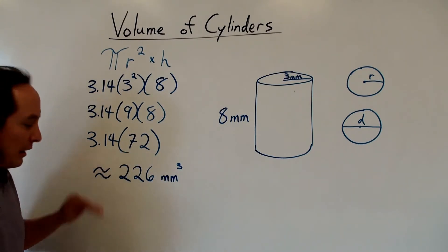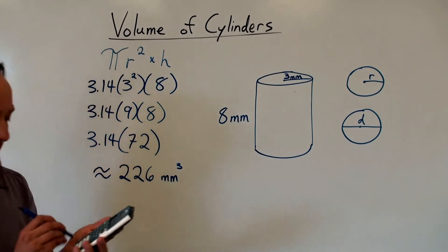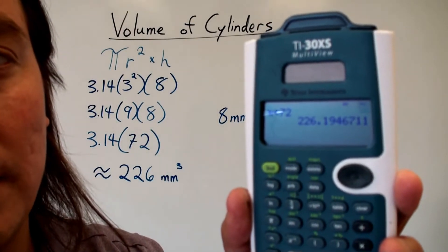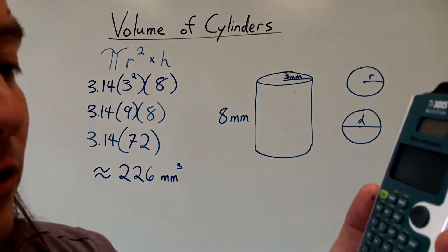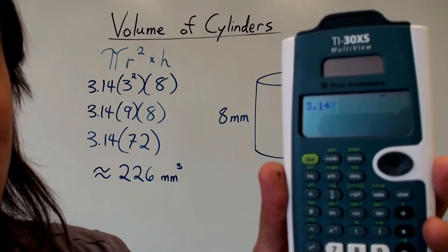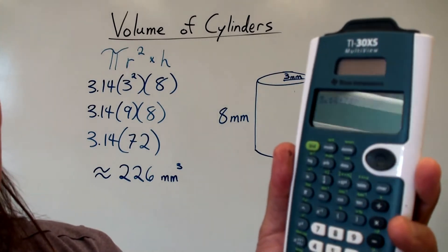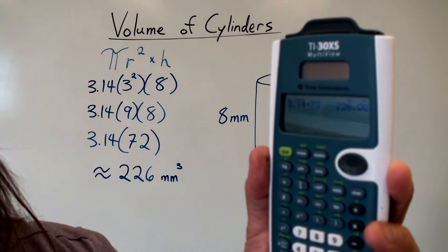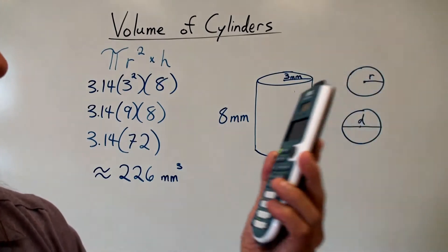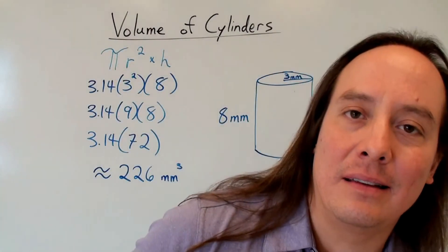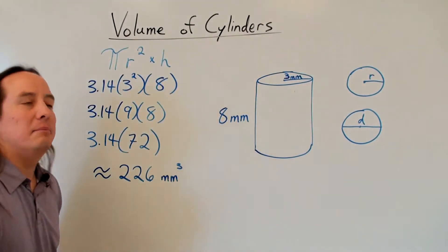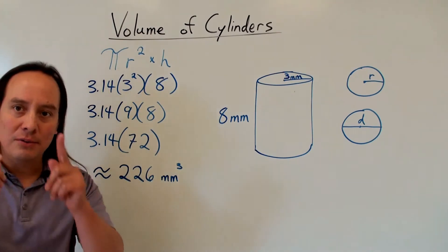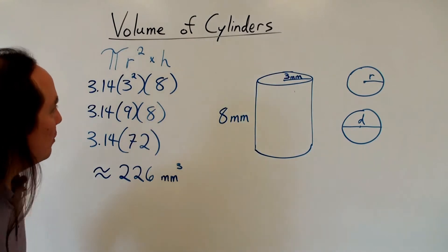Using the pi button, we got 226.1946711. Now let me clear that and just use 3.14 times 72 — we get 226.08. Much simpler looking, but I've noticed that on tests and practice books they tend to use the more precise answer. So use the pi button on your calculator. That was pretty straightforward — we've already talked about a lot of this when we covered circles.